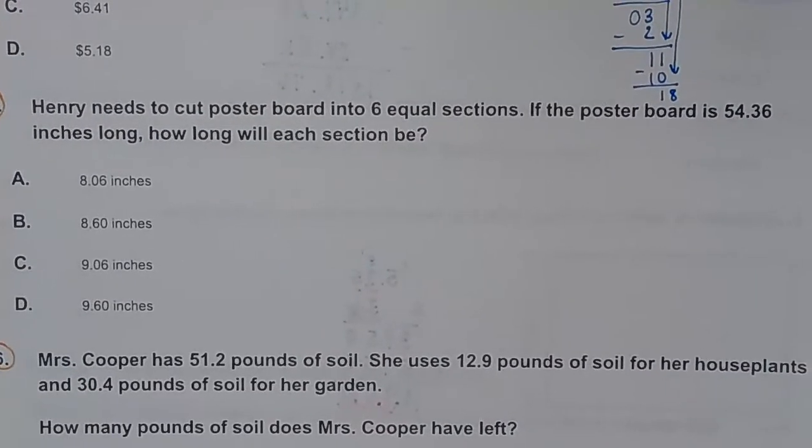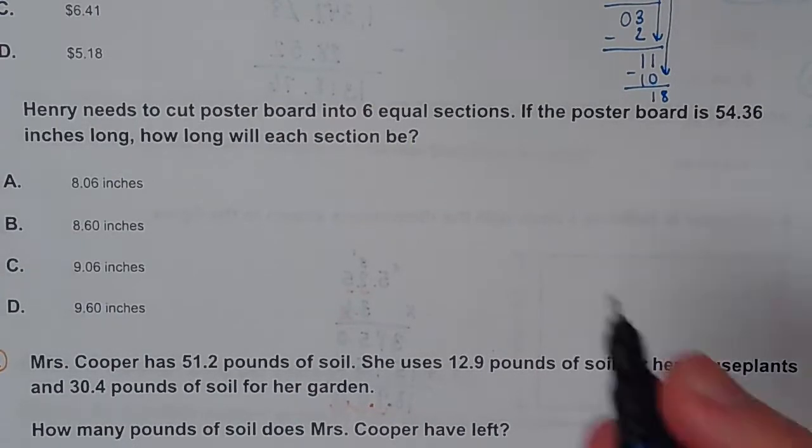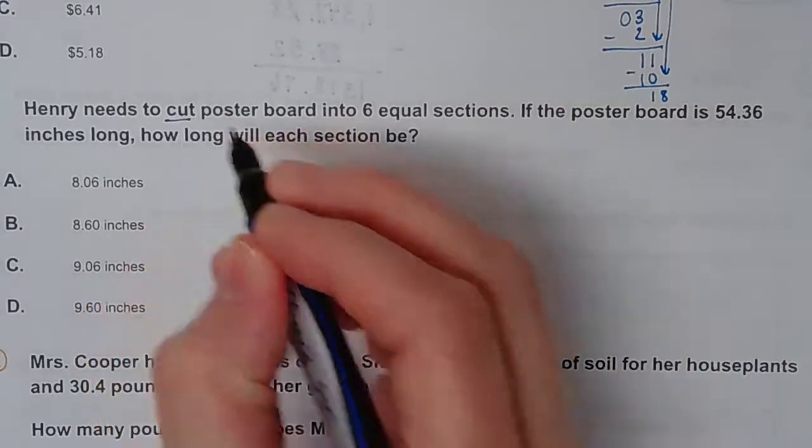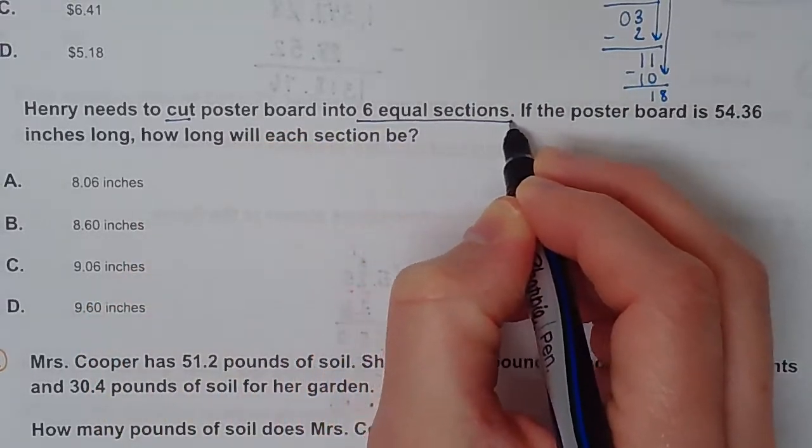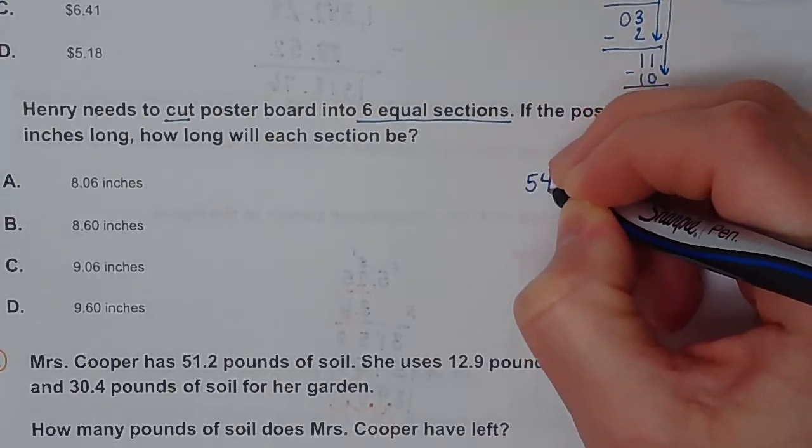Henry needs to cut a poster board into six equal sections. If the poster board is 54.36 inches long, how long will each section be? This is another one that you'll see a lot. Anytime you see something about cutting the board into equal sections, that's a dead giveaway that you're dividing. You're taking something this big and dividing it into smaller pieces.